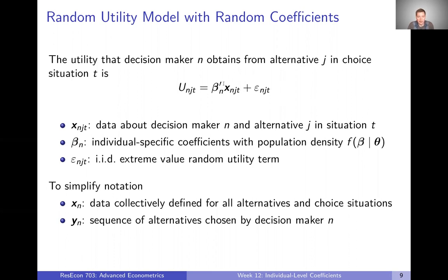X is once again just the data — the attributes about the decision maker and the alternative in that specific time or situation T. The betas are those individual-specific coefficients that come from a population density defined by F. And then epsilon is just an IID extreme value random utility term.